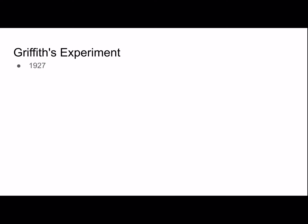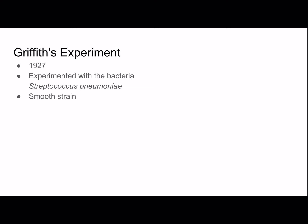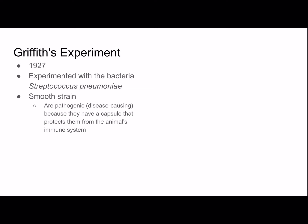Griffith's experiment was in 1927. He experimented with the bacteria Streptococcus pneumoniae. The smooth strain is pathogenic and disease-causing because it has a capsule that protects it from the animal's immune system, causing pneumonia. The rough strain is harmless because it doesn't have that outer capsule.